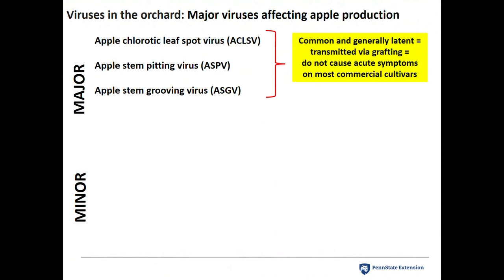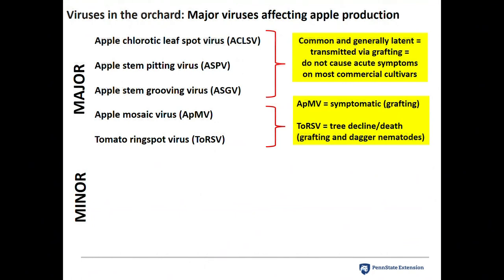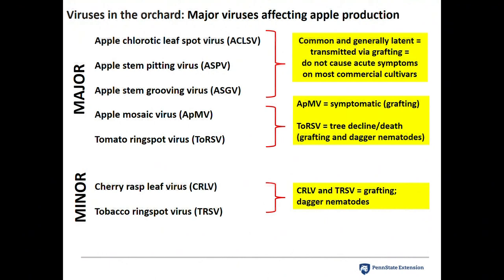Apple mosaic virus and tomato ringspot virus are a bit more problematic because they are symptomatic. Apple mosaic virus is primarily transmitted by grafting. Tomato ringspot virus — probably the most important virus for you in tree fruit — is transmitted by the dagger nematode, and this can kill both apple and peach trees. Minor viruses include cherry rasp leaf virus and tobacco ringspot virus, transmissible by both grafting and dagger nematode. These aren't very prevalent out east, but they're still of concern since the bulk of nursery production is out west.